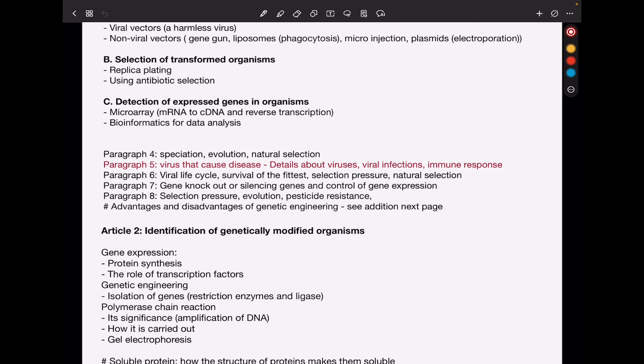So from paragraph 4, I see speciation, evolution, natural selection. And then paragraph 5 of article 1, you can talk about viruses that cause disease, the details about viruses like the viral life cycle, viral infections, and possibly immune response. But this, I think it's a long shot, but I just included it there. Just make sure you know everything. In paragraph 6, again, viral life cycle, survival of the fittest, natural selection, selection pressure, and ultimately leading into evolution.